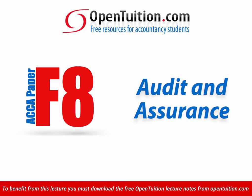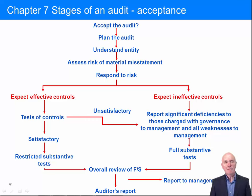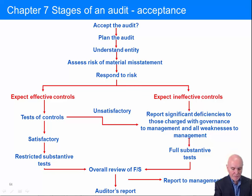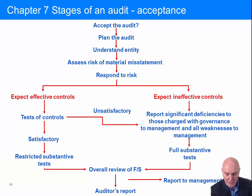This is a lecture from Open Tuition. For the free lecture notes that go with this podcast, please visit opentuition.com. In Chapter 7 we begin to go through the stages of the audit, and the diagram here will mainly go through Chapter 8. What we want to concentrate on in this chapter is what will happen before you begin the audit — you have to decide whether or not you actually want to accept the audit.